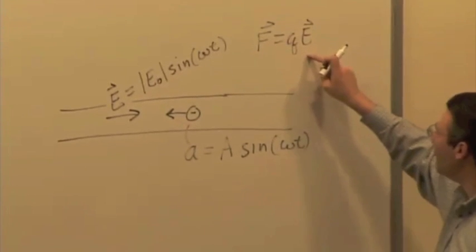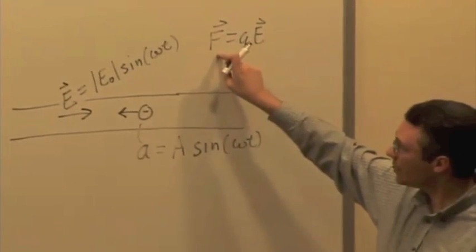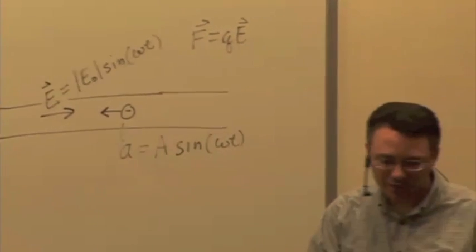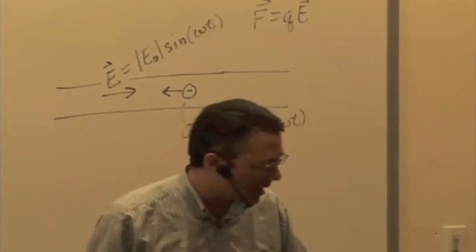So if your field is oscillating sinusoidally, the force is going to oscillate sinusoidally, the acceleration is going to oscillate sinusoidally, we have what's called an alternating current.